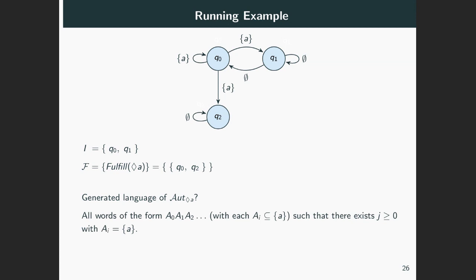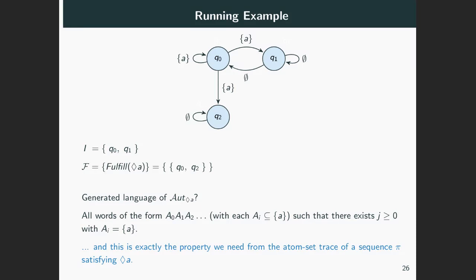It is easy to see that the accepted words are exactly those that have at least one singleton A set among their letters, meaning they do not consist of empty sets only. Note that this is exactly the condition that the atom-set trace of a sequence of states pi must fulfill in order to satisfy eventually A. Indeed, a sequence satisfying eventually A is precisely one that will have the atom A in the labeling of some state at some point. This is what we're going to prove not only for this automaton associated to eventually A, but in general for the automaton associated to any formula Psi — showing the relationship between sequences that satisfy a formula and the words that the associated automaton accepts.